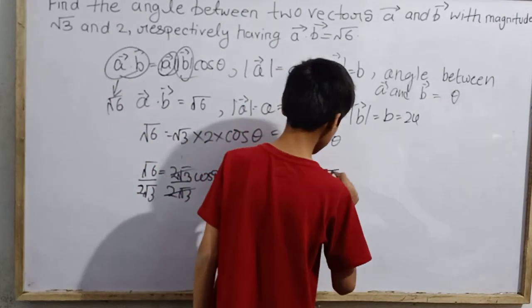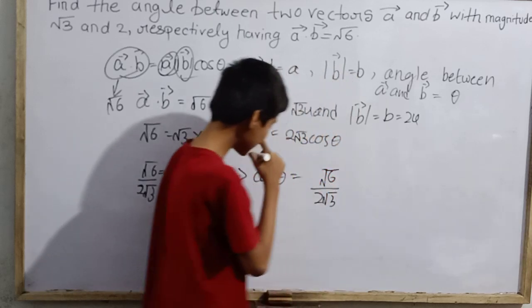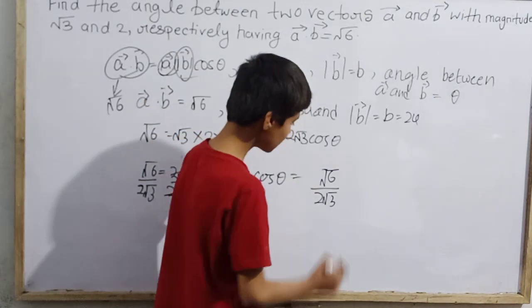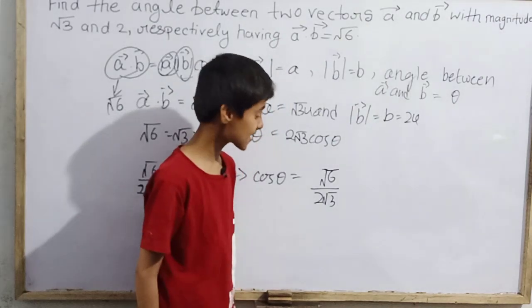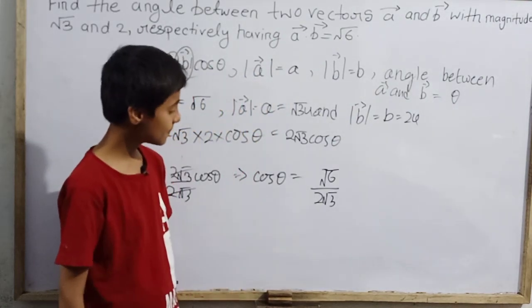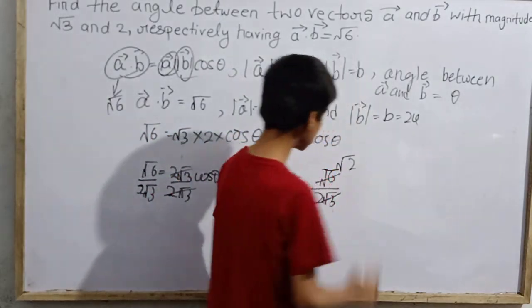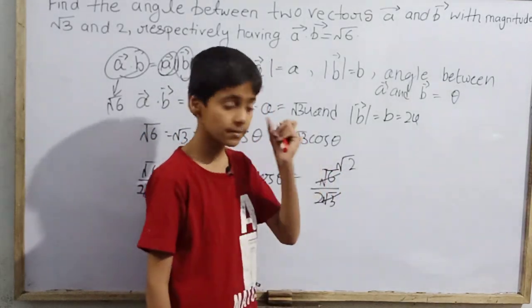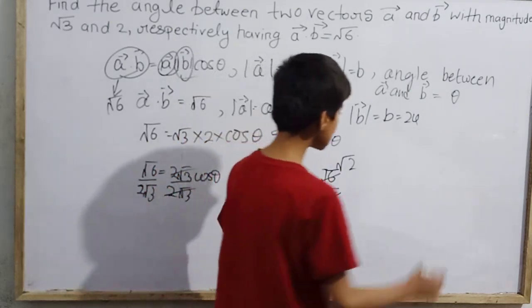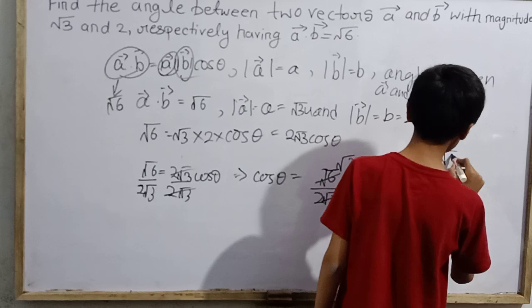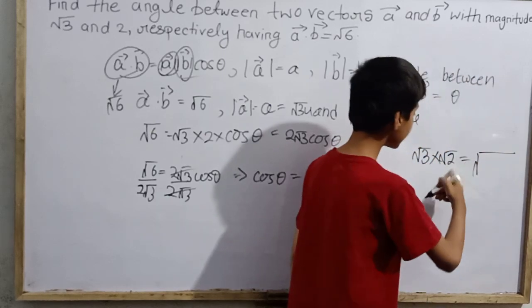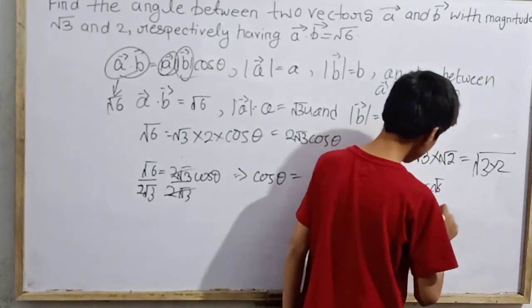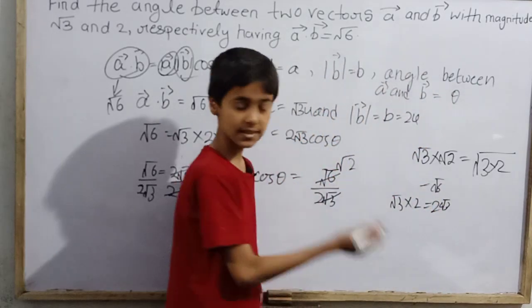Cos theta is root 6 over 2 root 3. Now what do we do here? If I want root 6, root 6 and root 3 to cancel, we can cancel it with root 2. It will only be root 2. What do we do in root? If root 6, this is 3 times 2. This is root over 2. Root 3 comes in and gives root 2 into this. This gives my root 3. So root 6 is root 2 times root 3.